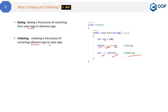One very important thing interviewers ask is: which one of them is an explicit process? The answer is unboxing is the explicit conversion. This is because in unboxing we have to mention the type — like here we have mentioned it as `int`. So it is an explicit conversion. In the case of boxing, we are not specifying any type, so boxing is an implicit process.